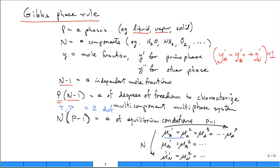Now what would be N? N would be the number of components. If it was pure water, N would be 1. If it was water and ammonia, N would be 2. Water, ammonia, oxygen, N would be 3.